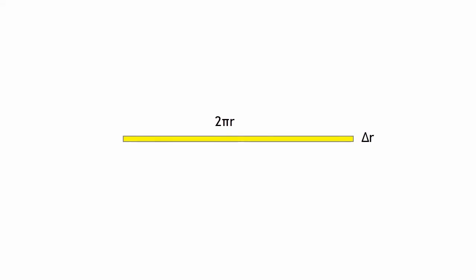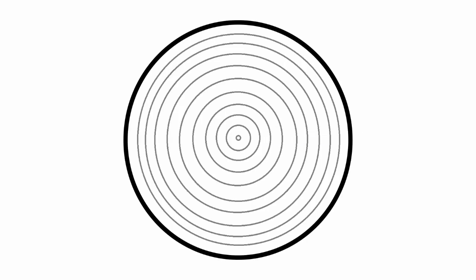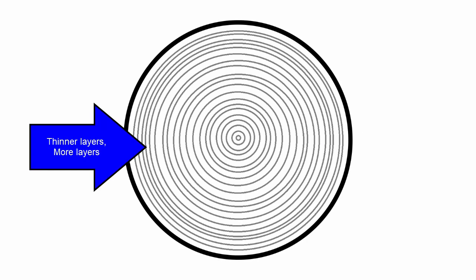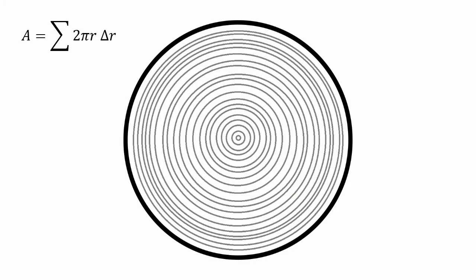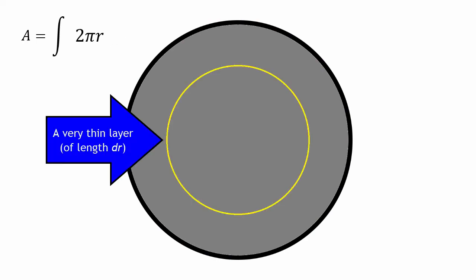Now, to get an even more accurate answer, we want delta r to be really, really small and approaching zero. And when delta r becomes really, really small, the number of layers that we have to add up goes higher and higher. And as delta r approaches zero, the number of layers that we have will approach infinity. And when you do a sum over an infinite amount, that is an integral. And as you can see here, the delta r changes into a dr to represent a really, really tiny thickness.